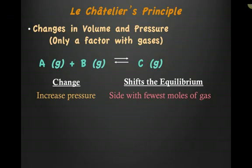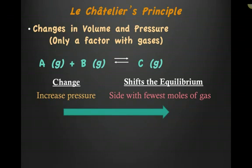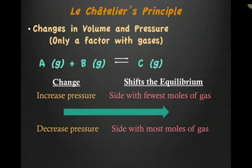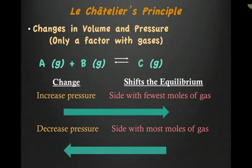Which side has the smallest number of moles of gas? It's the right side, meaning that the forward reaction is favored. Now, if I decrease pressure, I go to the side with the largest number of moles of gas. That means the equilibrium is going to shift to the left, favoring the reverse reaction.